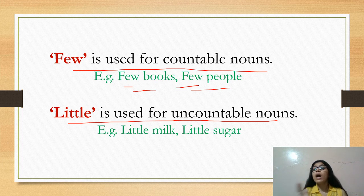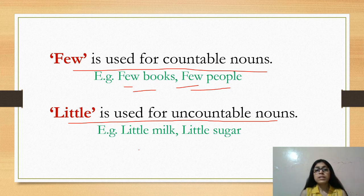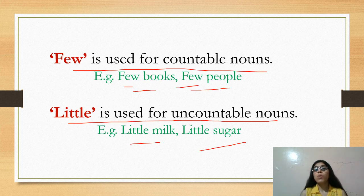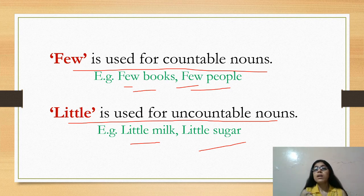Likewise, little jo hai wo uncountable nouns ke saath aata hai — nouns jisko aap count nahi kar sakte. For example: little milk, little sugar, or little water. Milk, sugar, water kaise nouns hain? Uncountable. You can't count milk, you can't count sugar, you can't count water. To inke saath aap kya use karoge? Little. Clear? Few ka use countable nouns ke saath, little ka use uncountable nouns ke saath.